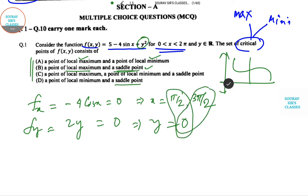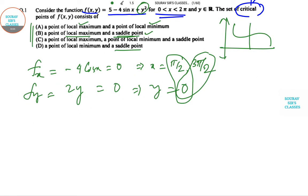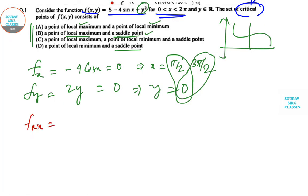Now we compute the second derivatives: fxx = 4sin(x), fyy = 2, and fxy = 0.